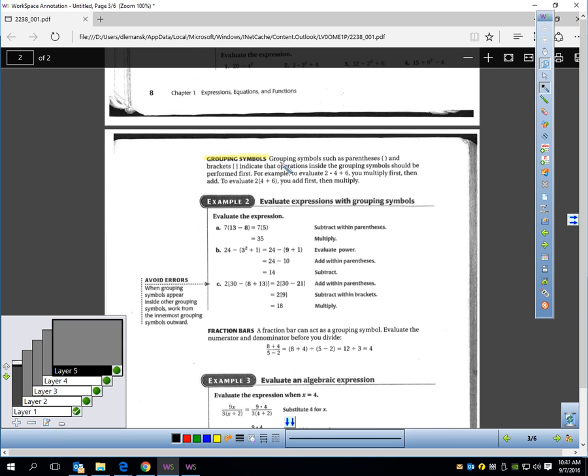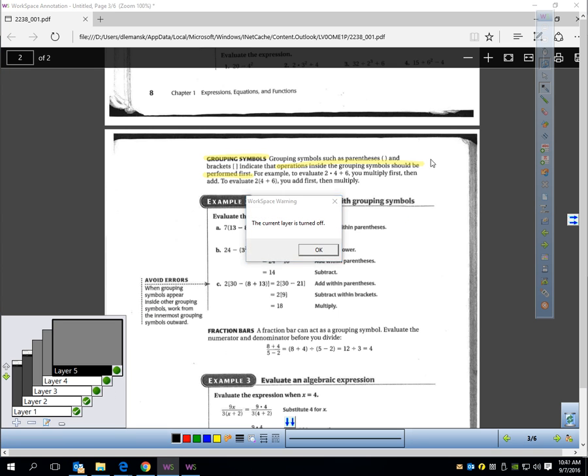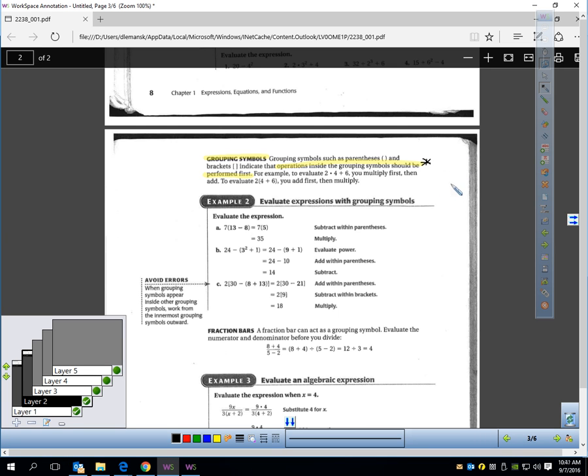Let's talk about grouping symbols. Grouping symbols, like parentheses or brackets, indicate that operations inside the grouping symbols should be performed first. That's key. In other words, if you have parentheses inside of parentheses, you've got to do those things first.